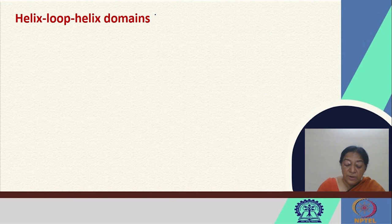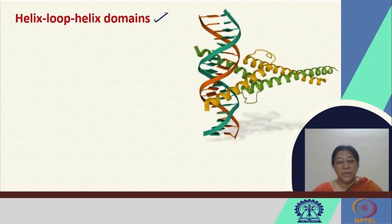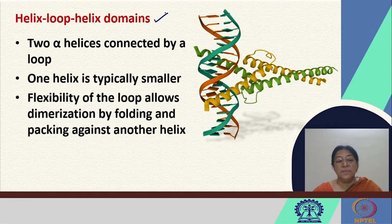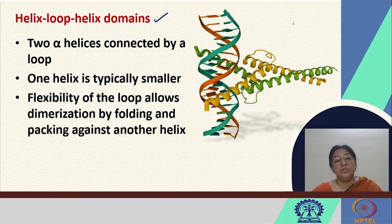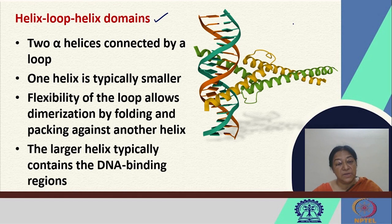The helix loop helix domain is another type of DNA binding domain. Unlike the helix turn helix domain, in the helix loop helix domain the two alpha helices are connected by a loop. One helix is typically smaller than the other, and the flexibility of the loop allows dimerization by folding that packs against the other helix. The larger helix typically contains the DNA binding region which recognizes the DNA in the binding process.